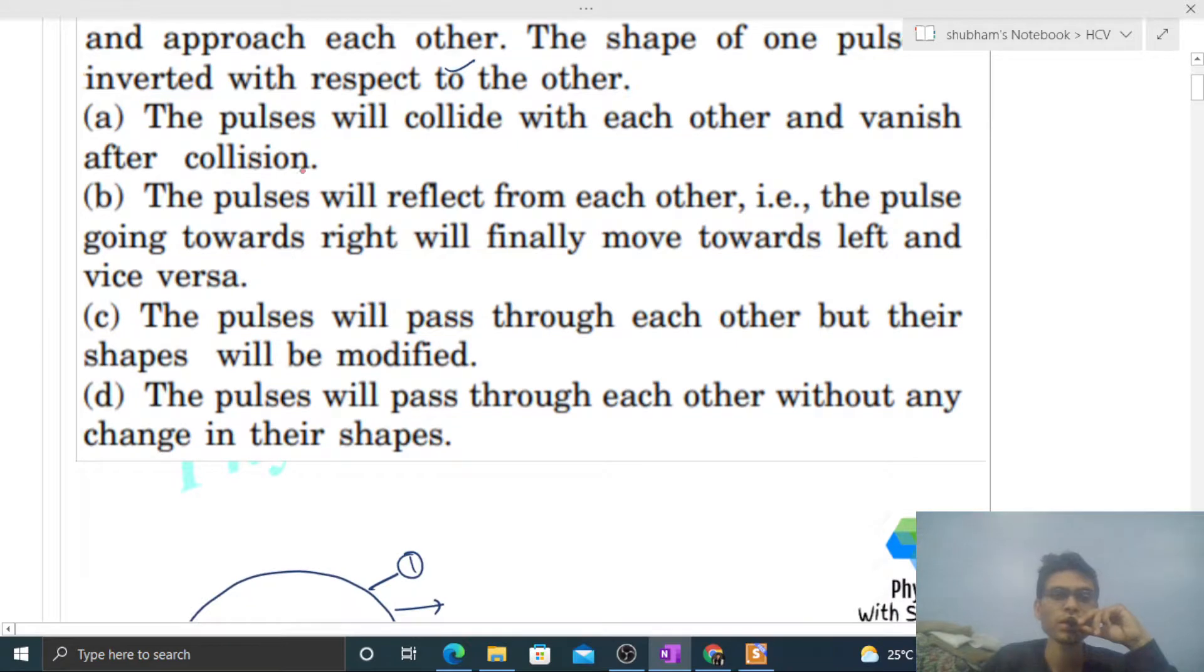So let's check the options. The pulse will collide with each other and vanish after collision - no. The pulse will reflect from each other, i.e., the pulse going towards right will finally move towards left - no. The pulse will pass through each other but their shapes will be modified - no. The pulse will pass through each other without any change in the shape.